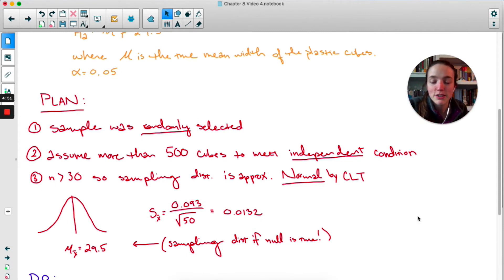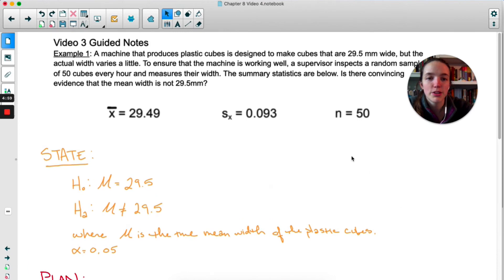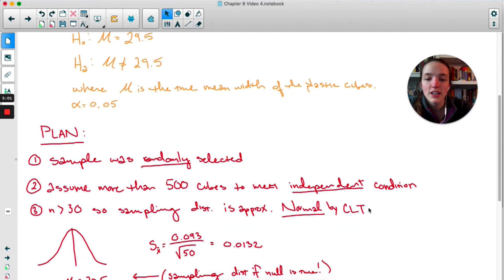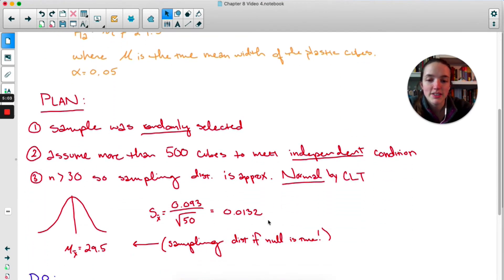However, we don't know sigma, so this is really the standard error of the sampling distribution of x bar. So I take the standard deviation from the sample, the 0.093, divide it by root 50. There's my standard error.